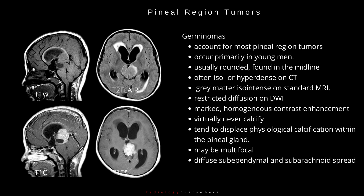Germinomas account for most pineal region tumours. They occur primarily in young men. They are usually rounded and found in the midline, often iso- or hyperdense on CT, and grey matter iso-intense on standard MRI. They show marked, homogeneous contrast enhancement and virtually never calcify. They tend to displace physiological calcification within the pineal gland.